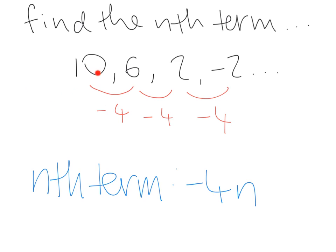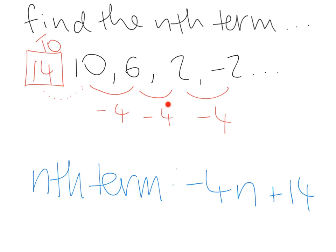Since 10 is term one and we're minusing 4 each time, we now have to add 4 to take a step back to the zero term. Adding 4 to 10 gives us 14, so term zero is 14. Since it's positive, we stick on plus 14. The nth term of the sequence 10, 6, 2, -2 is -4n + 14.